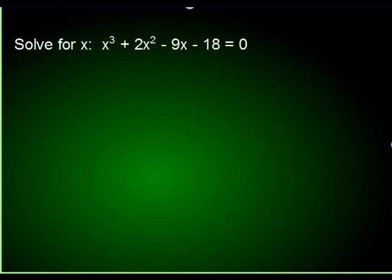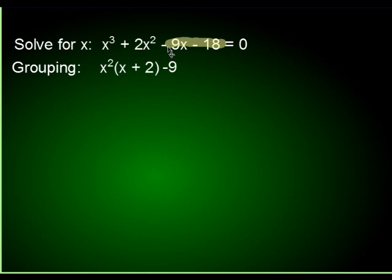Let's first focus on this particular problem here. Let's say you were supposed to solve for x. Notice that it's third degree. Because of that, we can expect three answers. Typically, when you get a problem like this, what you'll want to do is try to factor by grouping. Take these first two terms, factor out x squared.